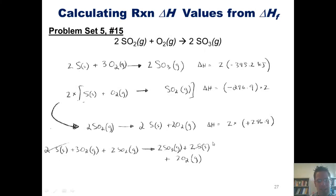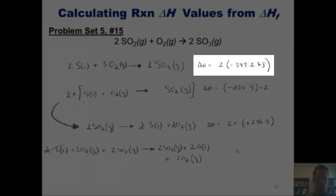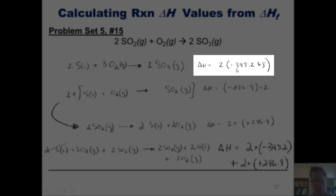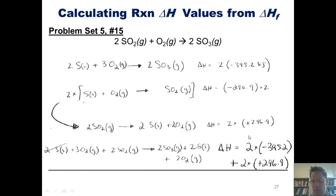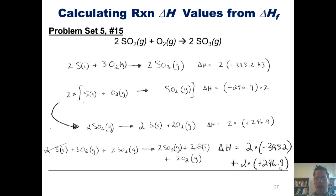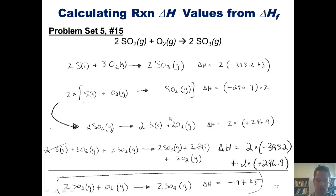You'll note that the two sulfurs cancel out from the left and right side of the equations because they are the same. You'll also note that in order to obtain an overall ΔH for this process, I have to add up the individual ΔHs for these two steps. ΔH for the first step is 2 times negative 395.2 and for the second step is 2 times positive 296.9. When I add all of that up, I get a final equation matching the original target one we were trying to obtain and an overall ΔH for this process of negative 197 kilojoules.